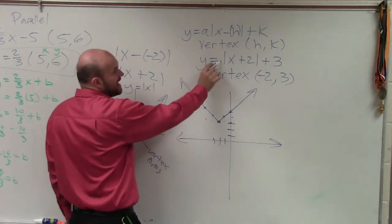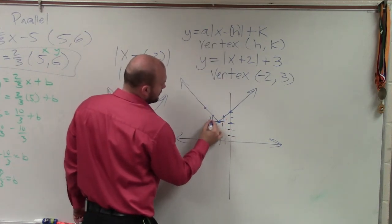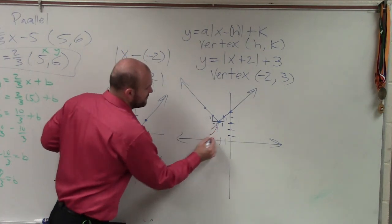So when you do not have a value of a, it's over 1, up 1. Over 1, up 1. And you just keep on following that pattern. And that's what my graph looks like. That is my vertex.